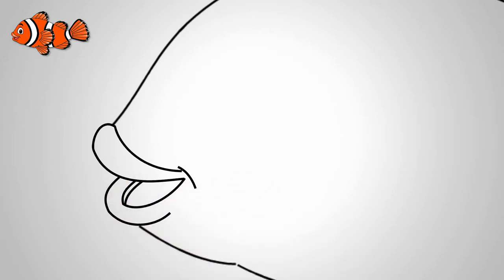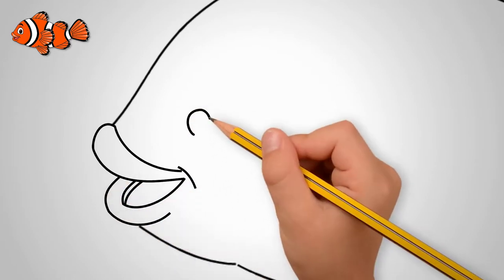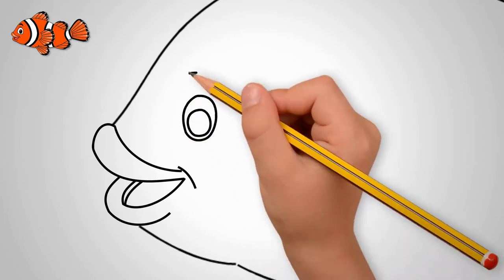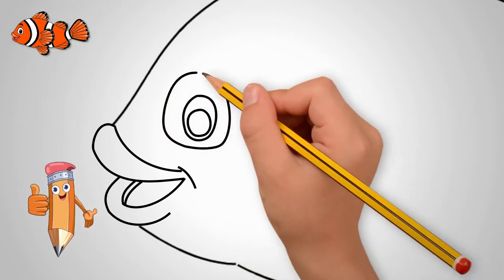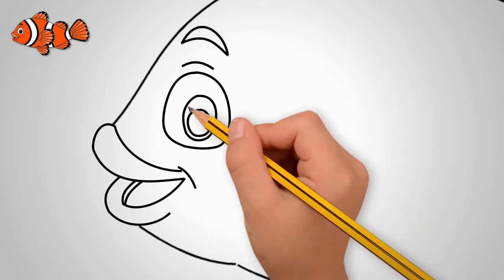In front of the fish draw the lips. Big lips and slightly open mouth. Draw an open mouth and part of the tongue of a fish.